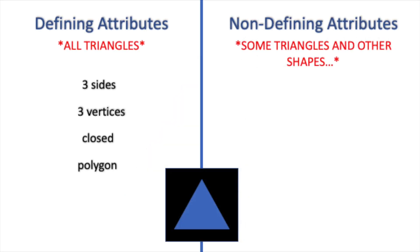The defining attributes of our triangle, which are true for all triangles, are that it has three sides, three vertices, it is closed, and it is a polygon.